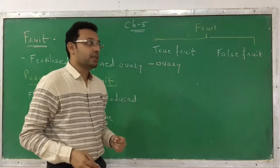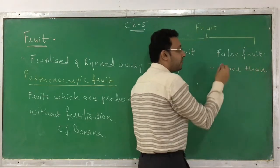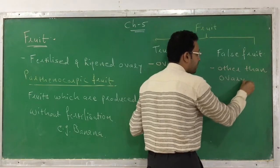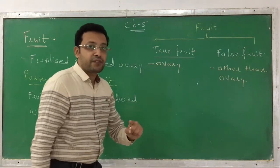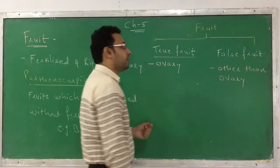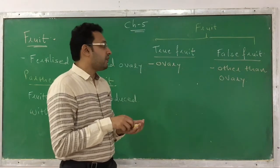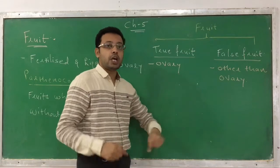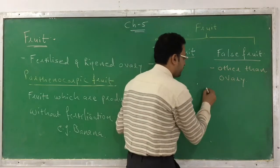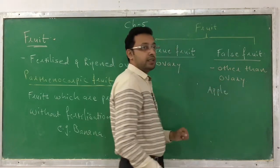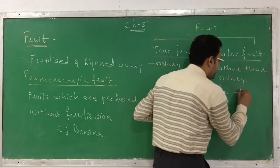Now, fruits that arise by fertilization of the ovary — they arise from the ovary and are called true fruits. But false fruits are not derived from the ovary; they arise from any other part of a flower other than the ovary. If the fruit arises from the ovary, we call it a true fruit. If the fruit arises from any other part of the flower except the ovary, it is called a false fruit. The example of a false fruit is the apple — the apple is not developed from an ovary.